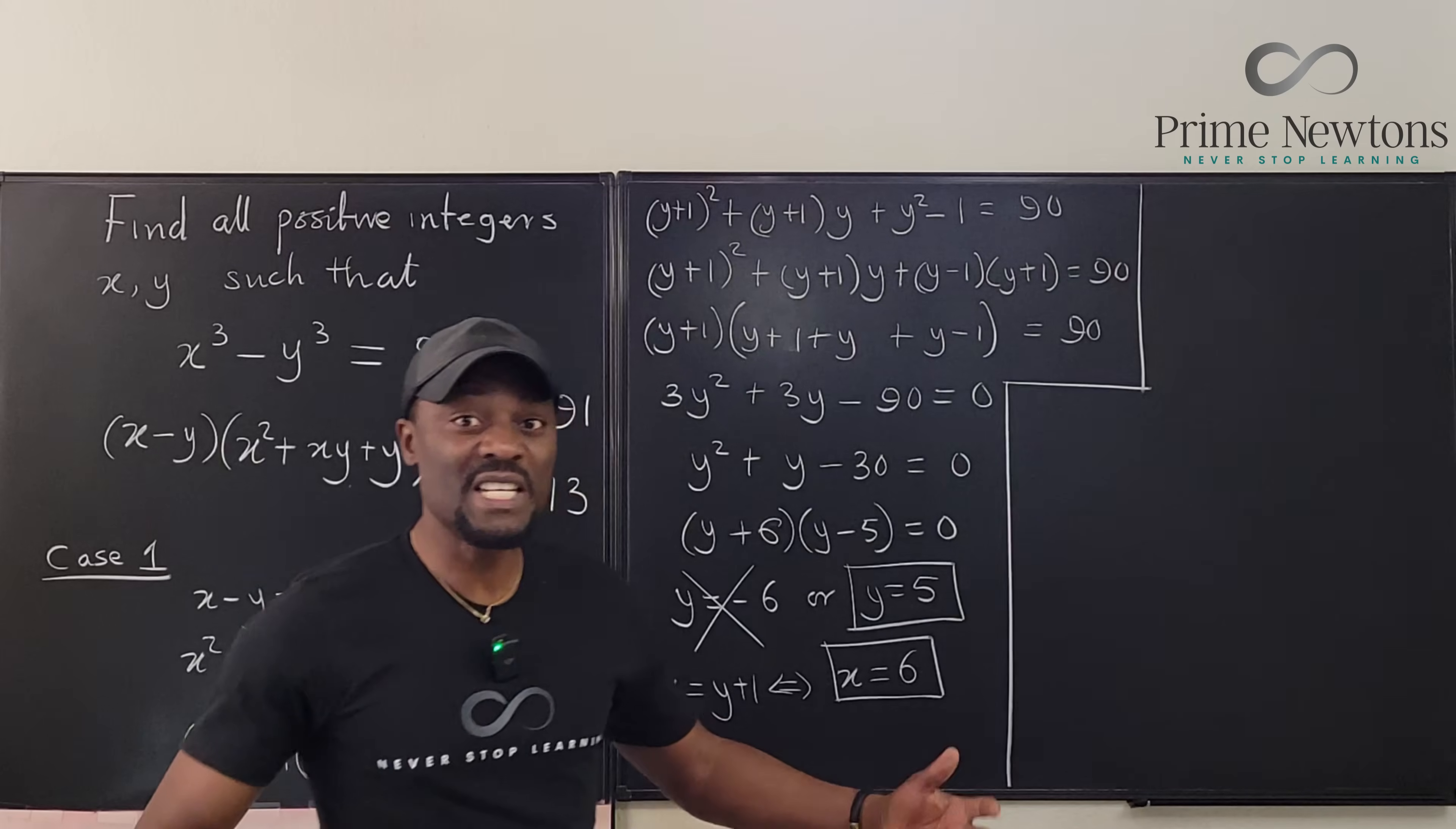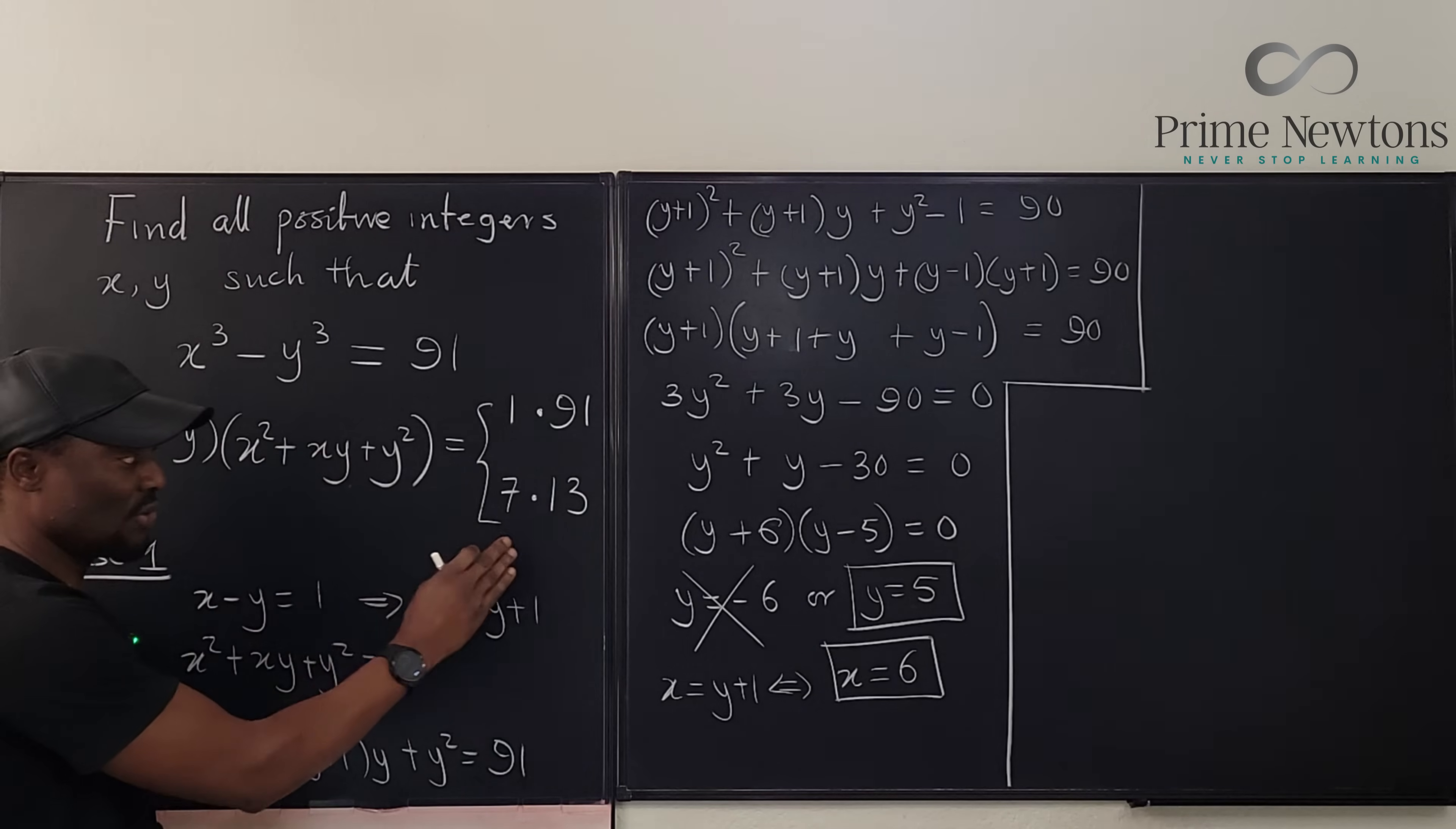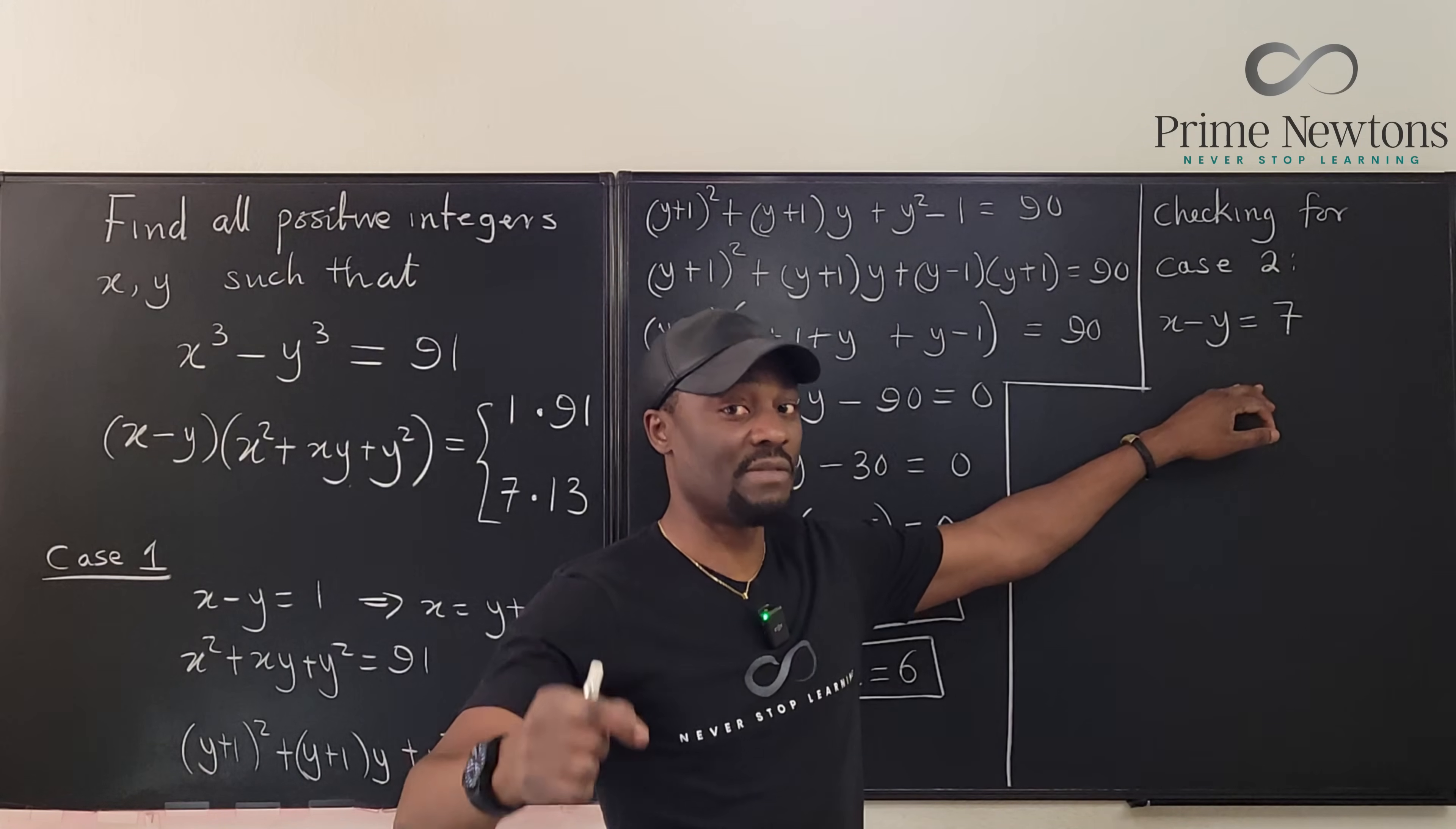Now, I don't need a lot of space for the second equation because just by looking at it, you could tell that there's a problem. So watch this. The second equation says x minus y. Remember we said x minus y has to be the smaller one. So x minus y equals 7. Now, this is a problem because if x minus y is equal to 7, it means that x is greater than 7.